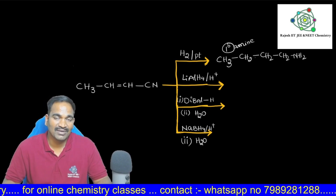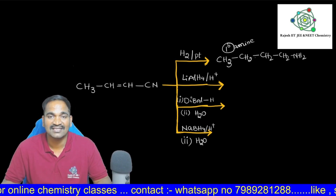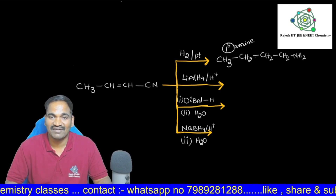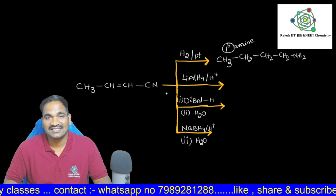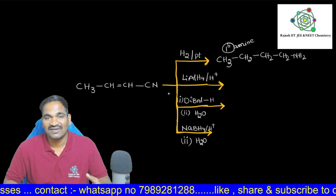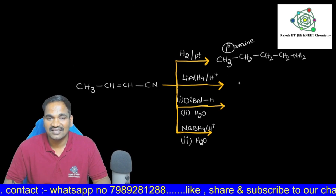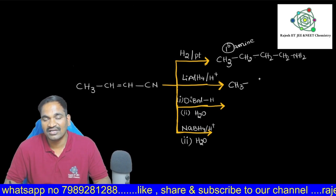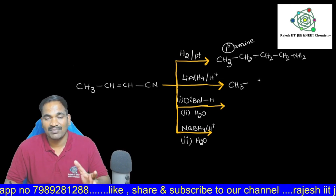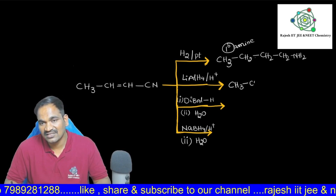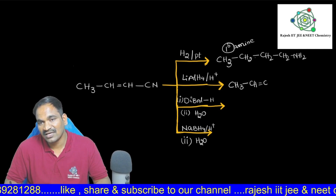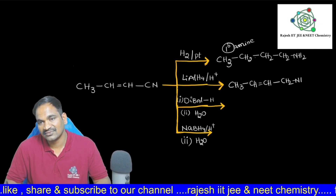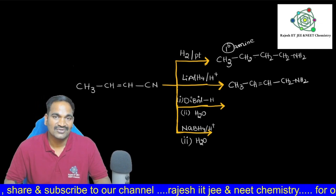Coming to lithium aluminium hydride (LiAlH₄), which is the most powerful reducing agent — even though it cannot reduce double bonds and triple bonds, you know very well about this point. It can reduce only cyanides to primary amines. So here, the double bond is never reduced — that is its nature; it cannot reduce double and triple bonds. Remaining functional groups it can reduce. So here you see the double bond remains as usual, and the cyanide becomes CH₂-NH₂.